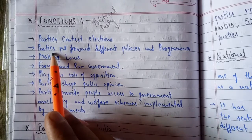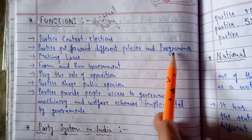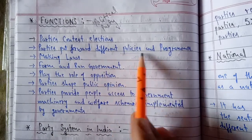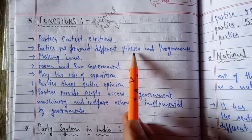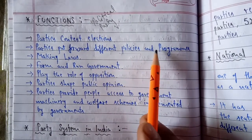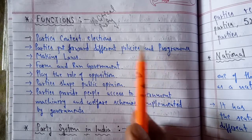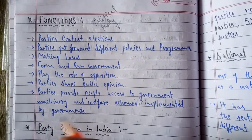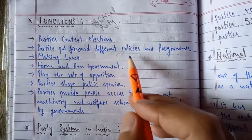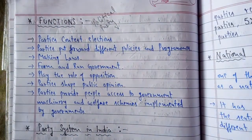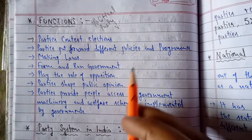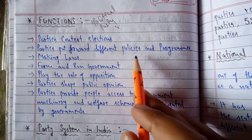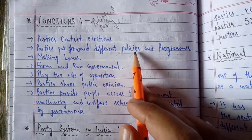Next, parties put forward different policies and programs for the development of society and the welfare of all people — for equality, freedom, equal opportunities, empowering women, giving pensions to aged people, or helping the handicapped. Every party has various policies and programs across different sectors.